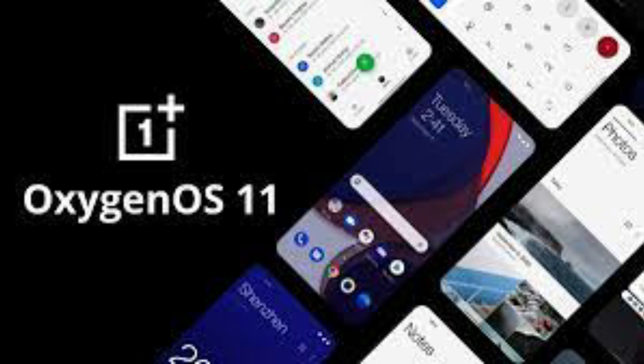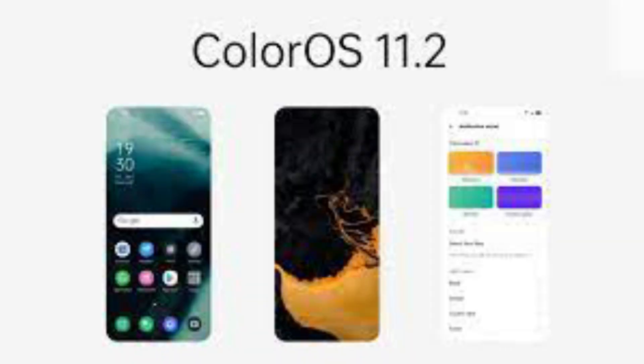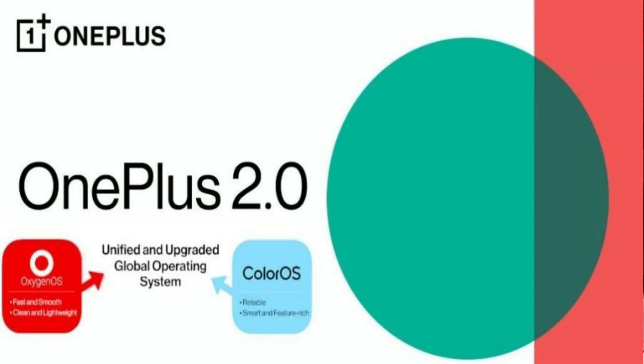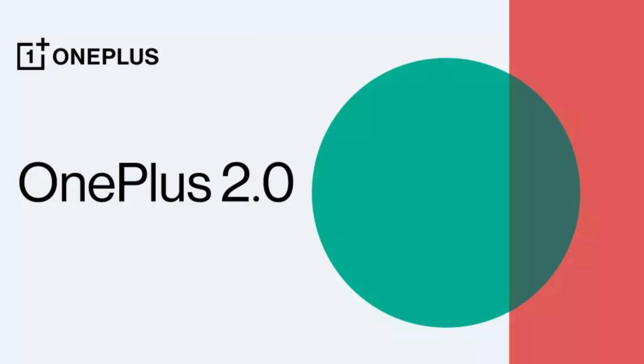This is the OnePlus OxygenOS, the Oppo Color OS, and the Unified OS. These two combined give a better experience. The user interface is very clean, very smooth, very light.